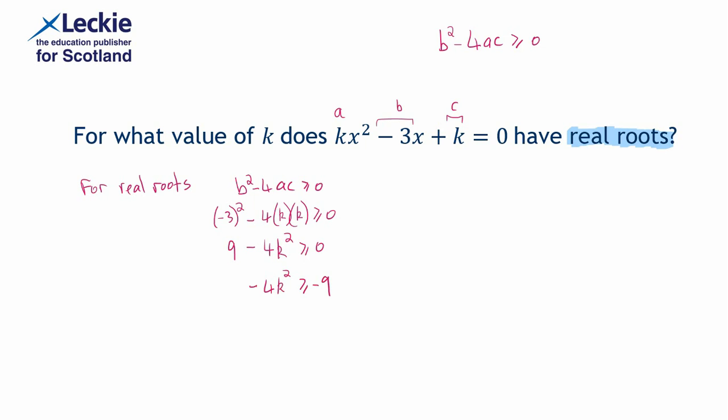Now you might be looking at this and thinking, well, I can see we've got negatives on both sides. I've got negative 4k squared and really I want k squared on its own.